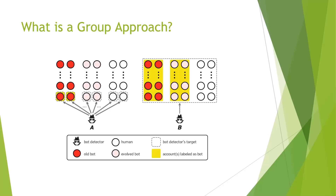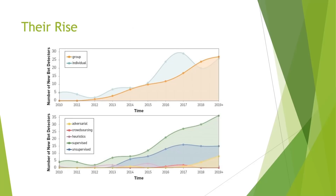What is a group approach? As seen in this diagram, on the left we have the individual approach, where the bot detector looks at each individual account and decides whether it is a bot. On the right is the group approach, which looks at a large group of accounts and detects bots by looking for things like collusion. These graphs show the steady rise of group detectors and how machine learning has risen, with unsupervised and adversarial approaches particularly significant for group approaches.